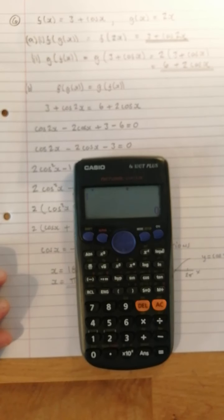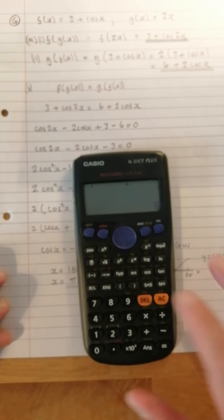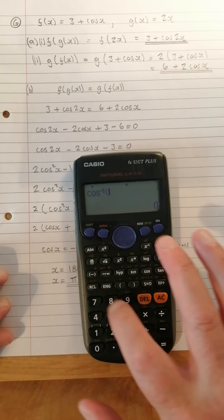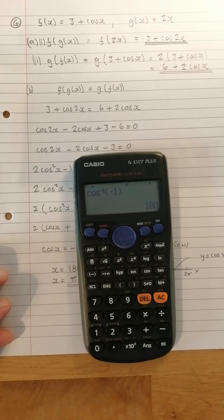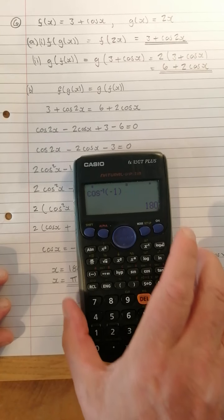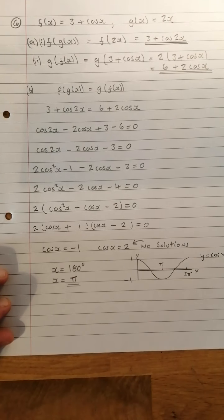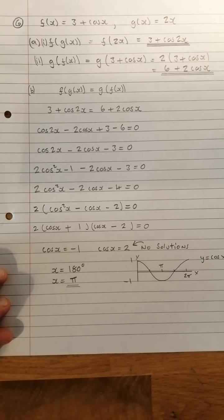I should point out with this being a paper 2, you could of course use your calculator. So we have shift cos minus 1, and your calculator gives you the 180 as well. So the answer is 180 degrees, but more importantly it's π radians. There we have it.